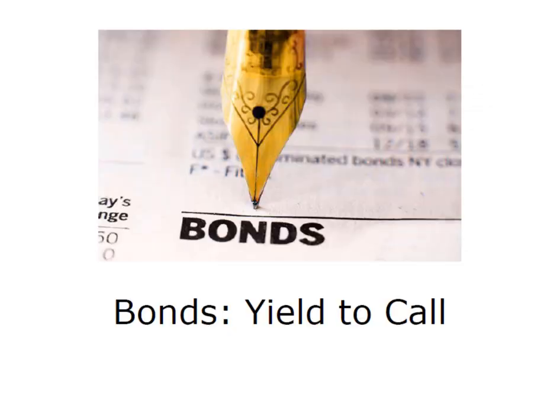Hey everybody, it's Professor Williams and we're going to calculate yield to call. We need to remember that some bonds have a call provision that allows the issuers to repay the bondholders par value prior to its scheduled maturity. What happens is issuers commonly pay bondholders the bond's par value plus one year of interest payments.